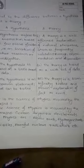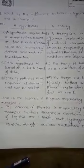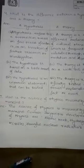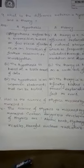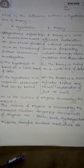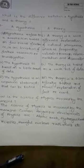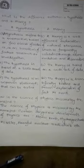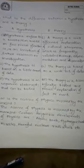Last question: How is the science of physics misused by mankind? The science of physics is misused by mankind through certain dangerous developments such as the atomic bomb, hydrogen bomb, missiles, and harmful nuclear radiations, etc.